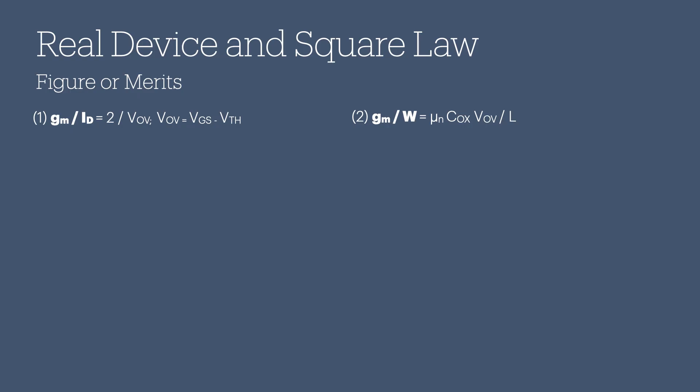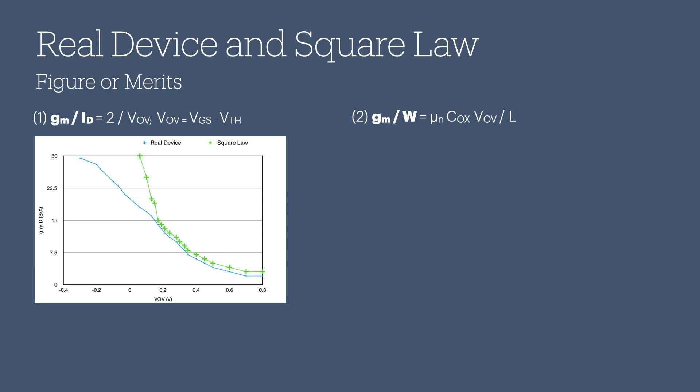In order to think systematically about these trade-offs, two figures of merit are introduced: GM over ID and GM over W. First, look at the GM over ID. On the graph, as we vary the overdrive voltage VOV from negative 0.4 to 0.8 volts, you can see that the real device (the blue curve) doesn't align with the square law, which is the green curve. Why? The square law is valid only when VOV is above 0.2 volts. If you go below that, it just doesn't represent the actual behavior of the transistor.